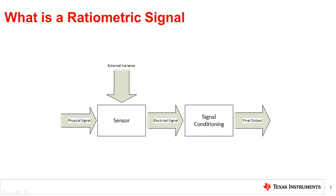In a ratiometric measurement, the conditioning of the signal is done with respect to the external variances as a reference signal instead of an absolute source. This means that the signal of interest is measured with respect to another signal to which it is proportionally correlated. Using ratiometric measurements, it changes from being an independent voltage or current to a component with much tighter tolerances. A simple example of this is a resistor.